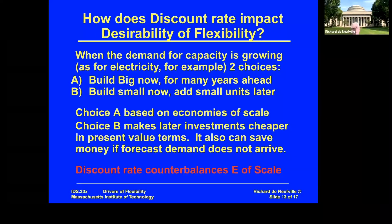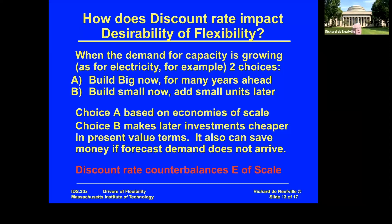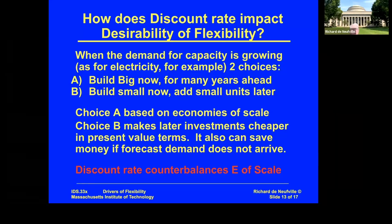I want to tie this in with the discount rate. When the demand for capacity is growing, say for electricity, you have two choices. You can build a big plant now for many years ahead — build a plant for the next 20 years. Or the other approach is to build small now and add smaller units later on as you phase the capacity according to the growth of the market.